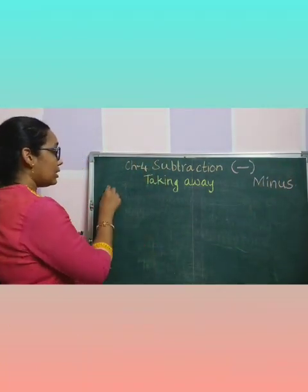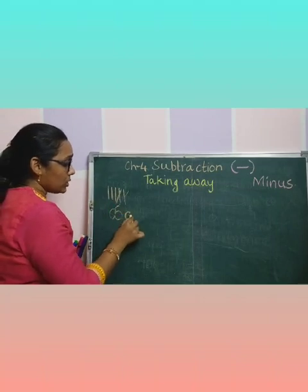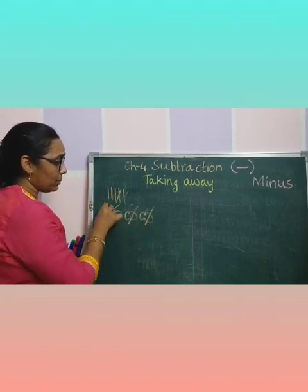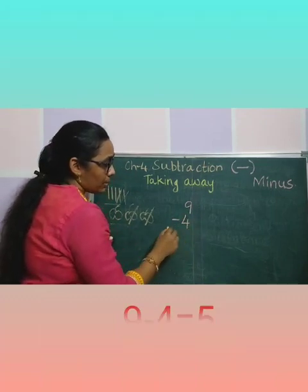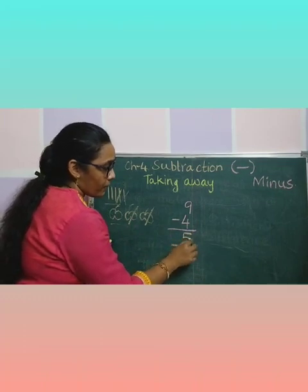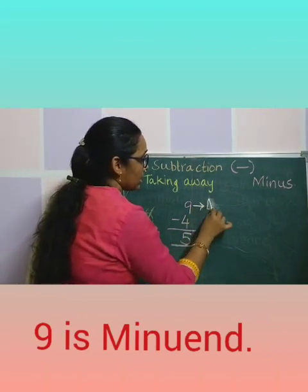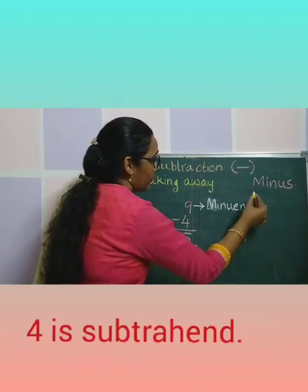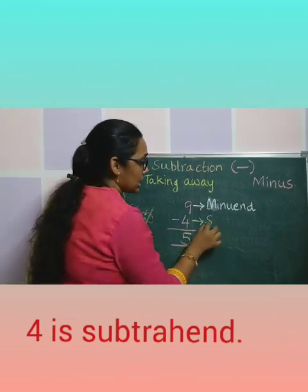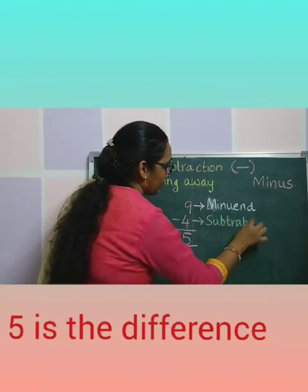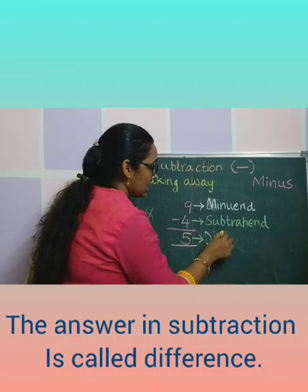Did you remember? In grade 1, we learned to draw lines and strike off, and we used to draw pictures and strike off and find out the remaining. Now, we have 9 color pens and you shared 4 with your sister — how many remaining? 5, right? The number from which we are subtracting is called the minuend. The answer in subtraction is called the difference.